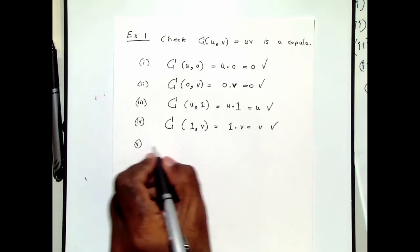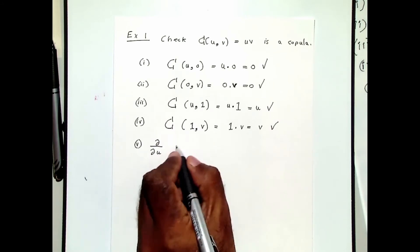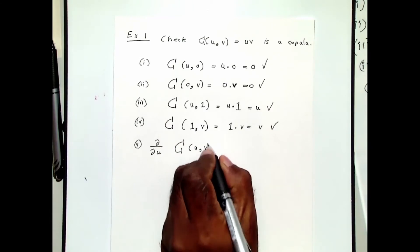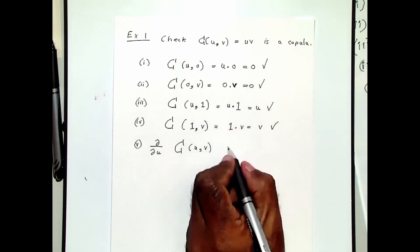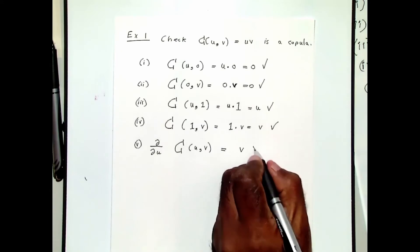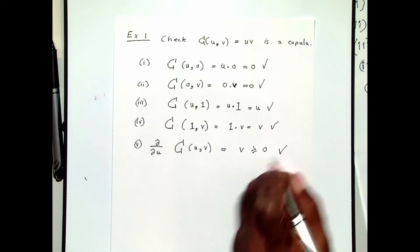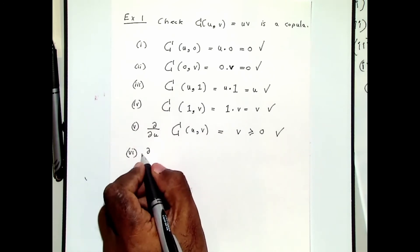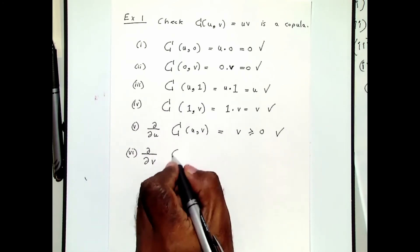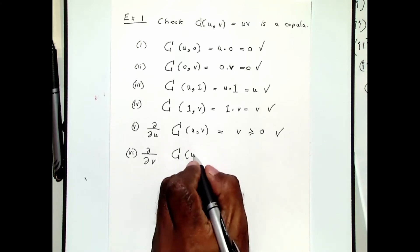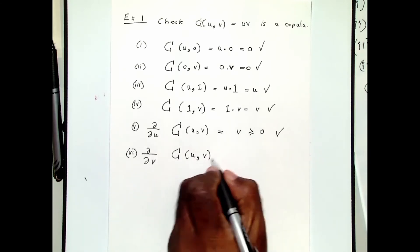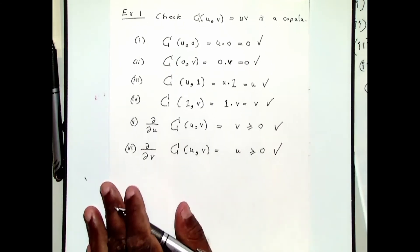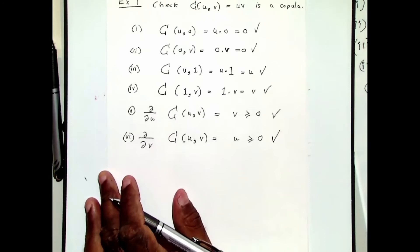Condition five is the partial derivative with respect to u of C(u,v) = uv. If you differentiate this with respect to u you get v, which is non-negative, so hence it is satisfied. Condition six is the partial derivative with respect to v, and this becomes u, which is greater than or equal to zero, and hence all six conditions are satisfied.